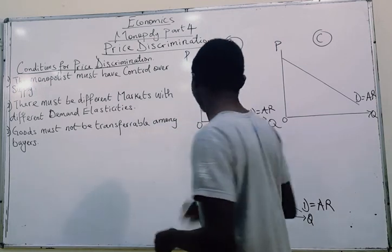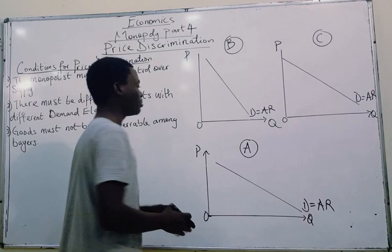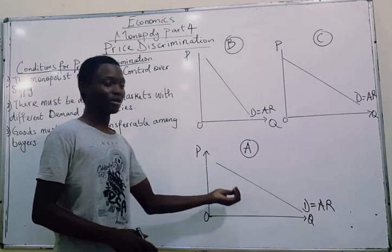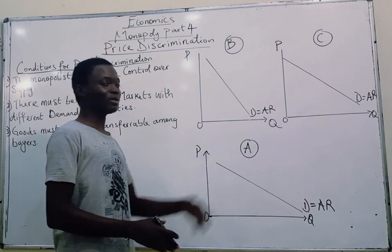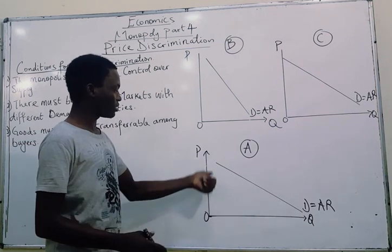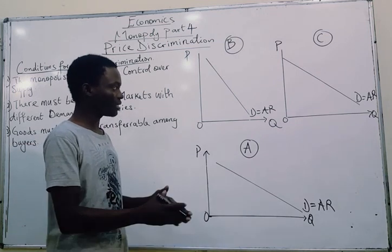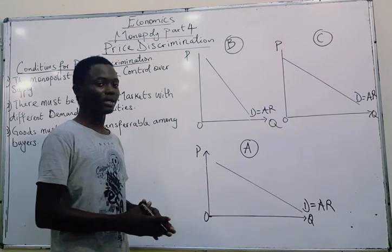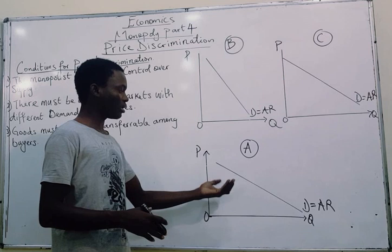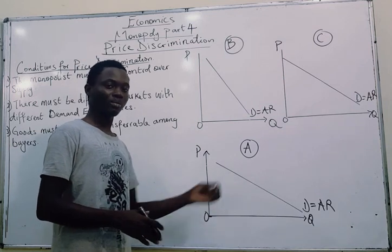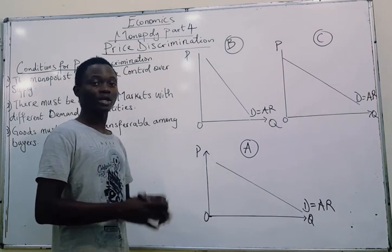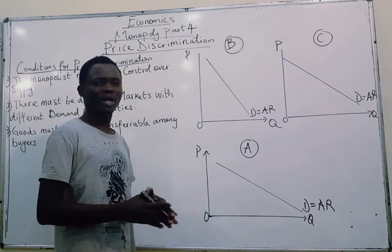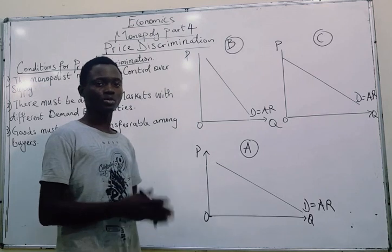That is what is explained with these graphs. Graph A shows the total market demand curve facing the monopolist — it's not starting from the origin and it's relatively flat. The monopolist then decides that instead of charging one price on this demand curve and supplying a total quantity to this market, why not break this market into two?